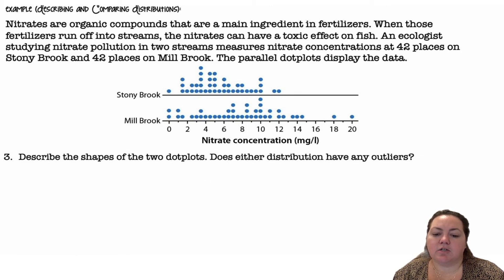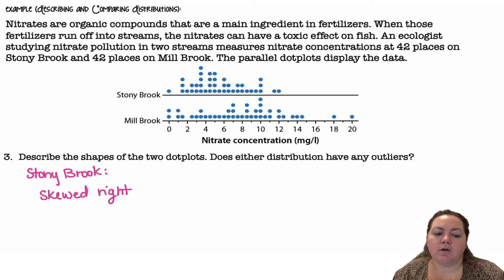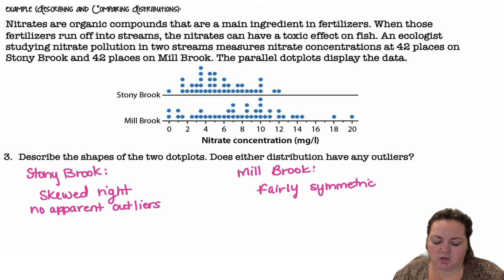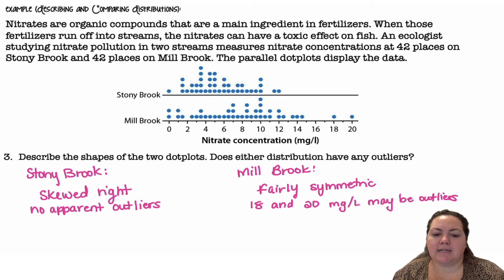Describe the shape of the two dot plots. Does either distribution have any outliers? For Stony Brook, we would say skewed right with no apparent outliers. Millbrook is actually fairly symmetric — there's not a super obvious skew — but it does seem like maybe 18 and 20 milligrams per liter may be outliers.